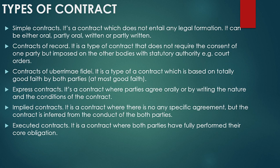Types of contract. We have simple contracts — a contract which does not entail any legal formation. It can either be oral, partly oral, written, or partly written. For example, when you go to a shop and buy a tissue paper, a book, or go to a kiosk and make a credit sale, agreeing to bring some amount of money in the evening. That is just a simple contract.